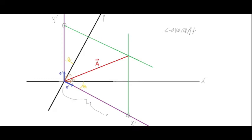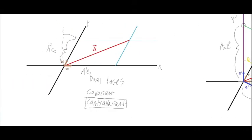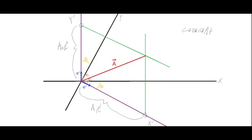The covariant component is written as a₁, where the index is in the subscript, while the basis e¹ has the index in the superscript. The same applies for the y-component: a₂ e². This is the opposite of the script placement we had for the contravariant components, and that's standard notation for covariant and contravariant components.